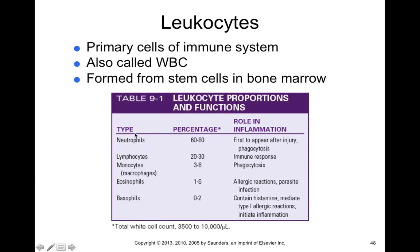Neutrophils are the first to appear after injury and are involved in phagocytosis. They are part of your innate immune response, so they're not specific — they more broadly respond to a wide variety of foreign antigens, debris, or tissue damage, and are the most abundant white blood cell.